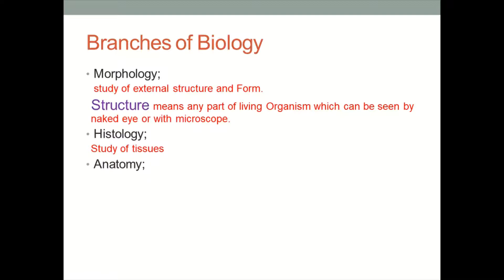The next branch is anatomy. Anatomy is totally opposite to morphology. In morphology we study about external structure, while in anatomy we study the internal structure of tissues and organs. In anatomy we discuss the structure of tissues, the formation of tissues, and which building blocks are responsible for the formation of tissues and organs.